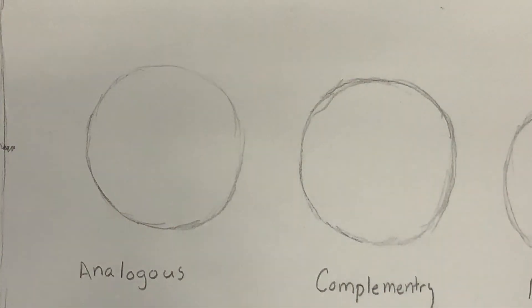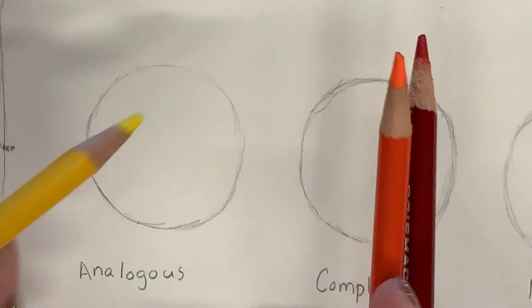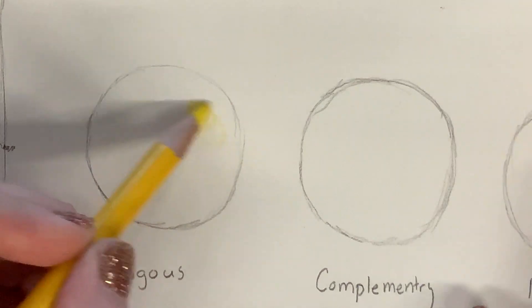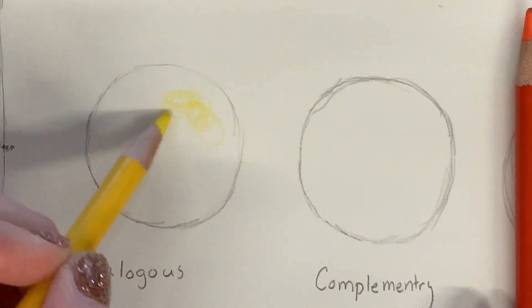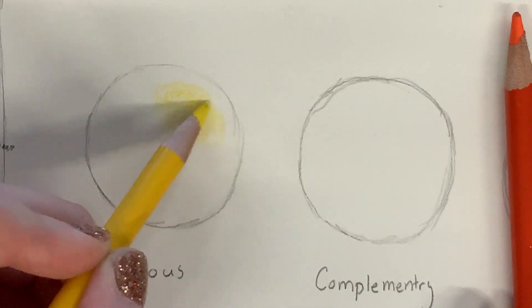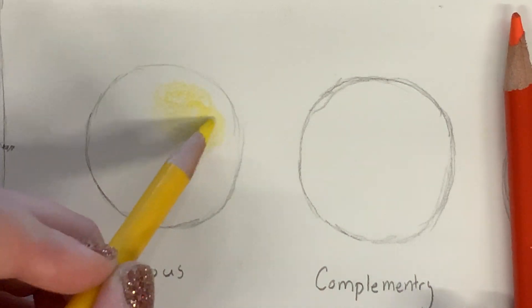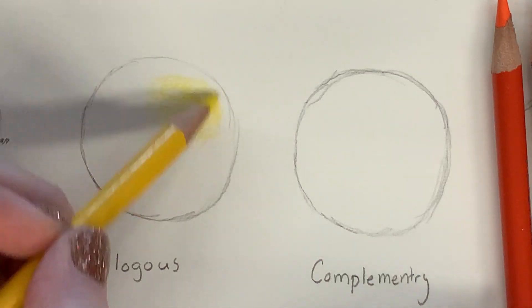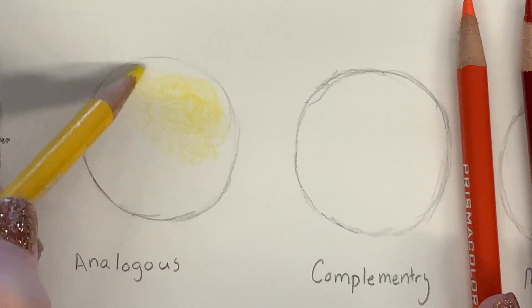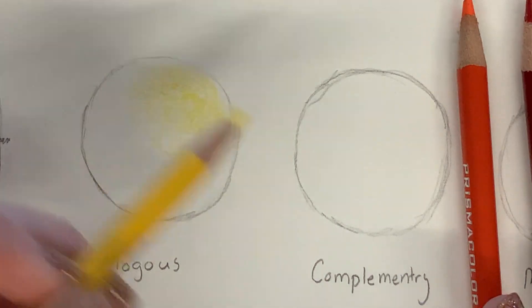So, I'm going to start by putting in the lights, which are going to be with yellow. And I'm going to say that my light source is coming from the right. So, I'm just going to carefully, using my scrambling, put some yellow in. And get lighter as I work my way out.